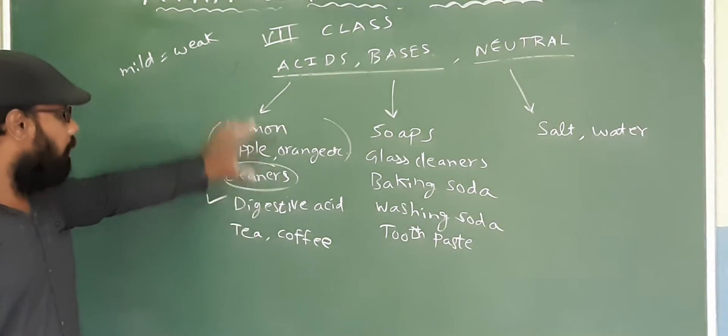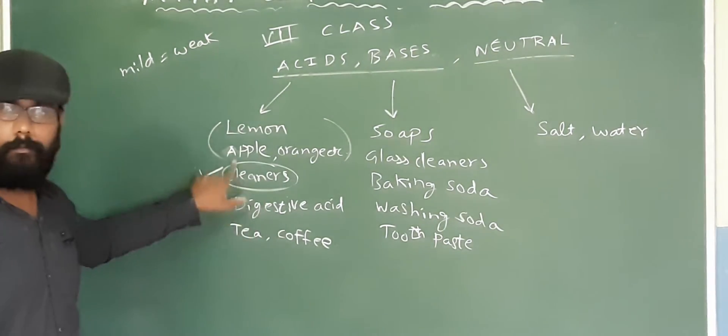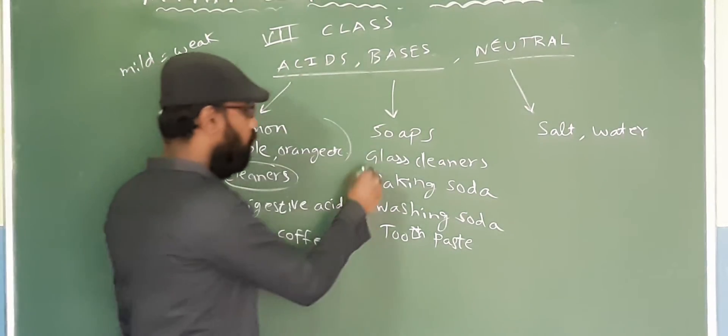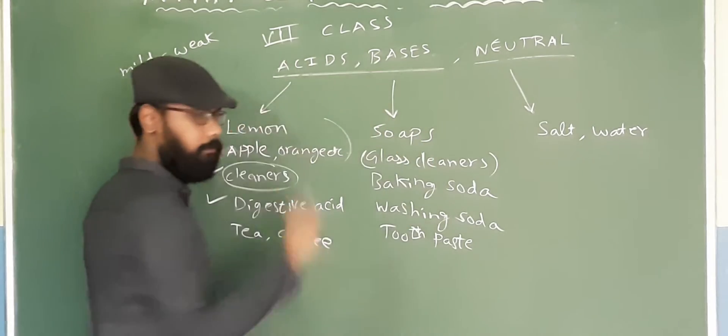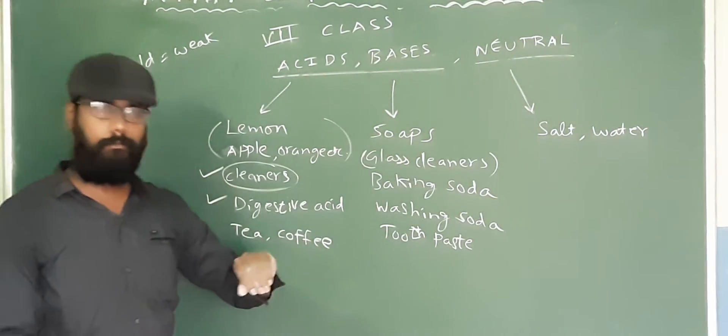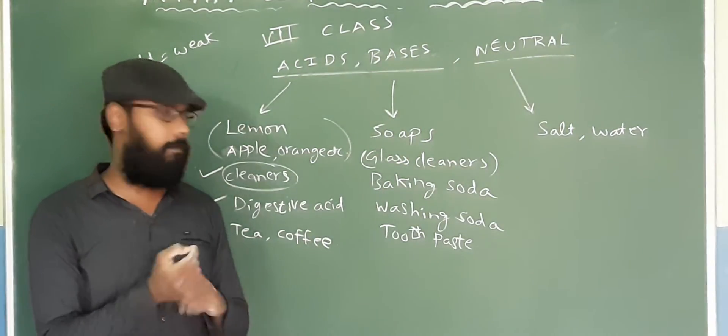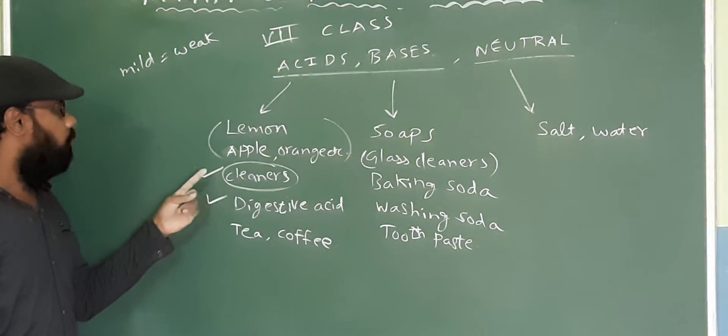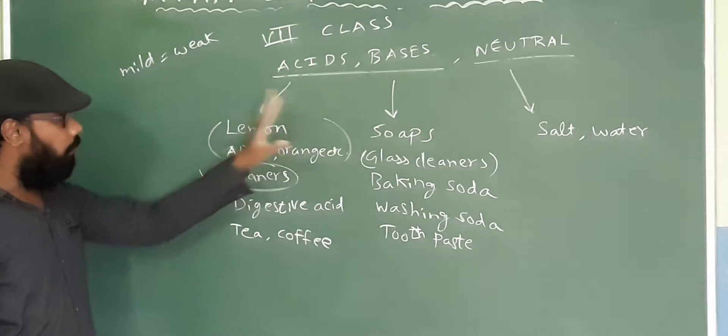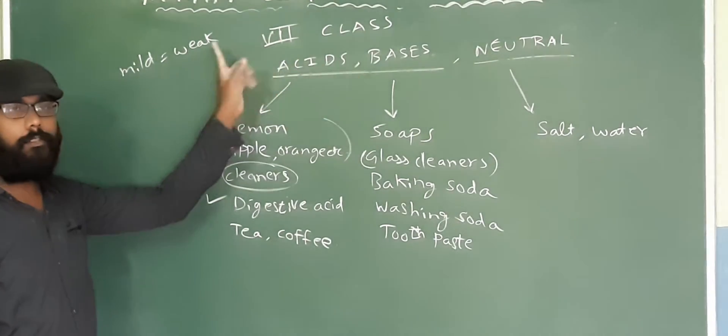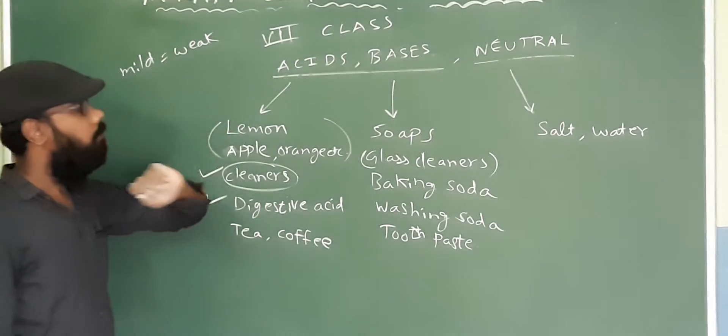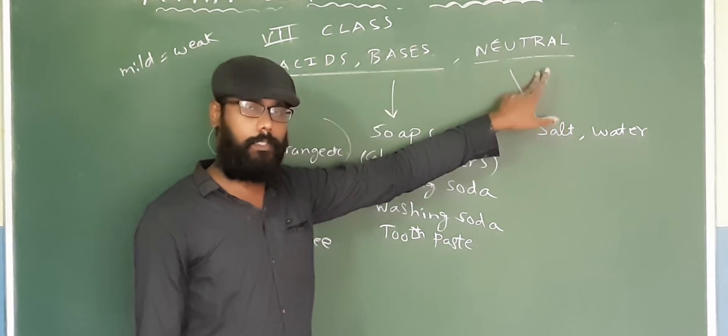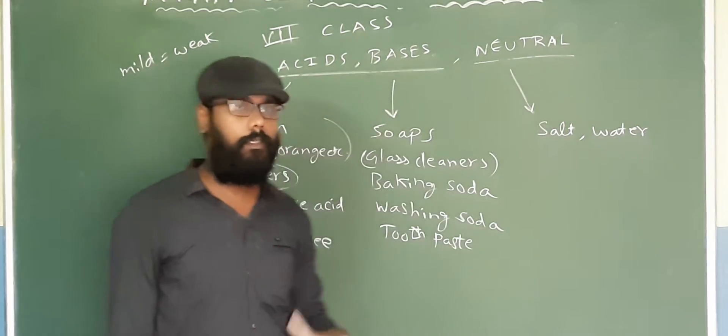Strong acids or strong bases - a few of these can cause some skin inflammation; your skin will be damaged. So the strong ones and weak ones are present. There are strong acids, weak acids, there are strong bases, weak bases, and there are neutral substances which are neither acids nor bases.